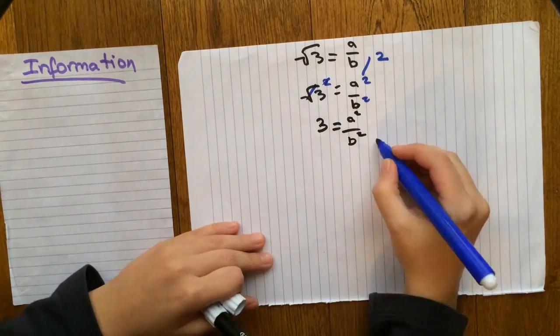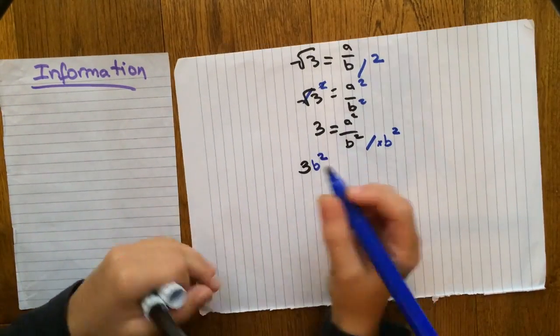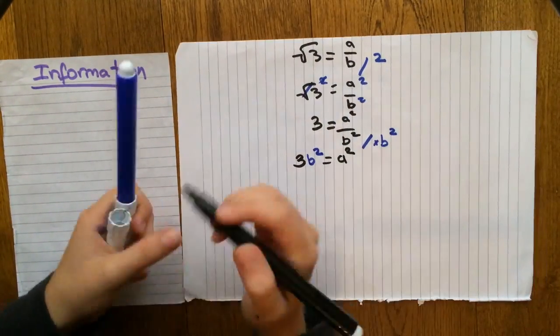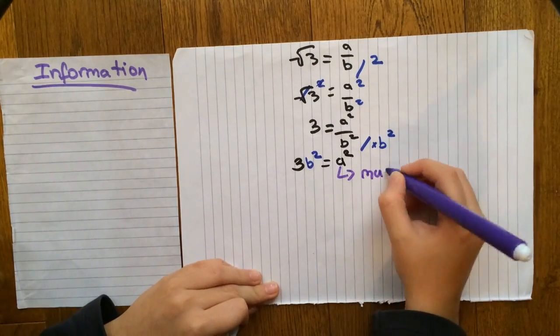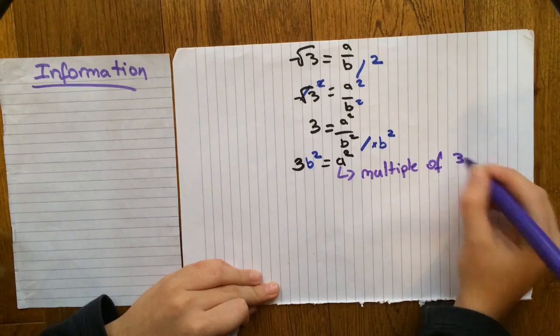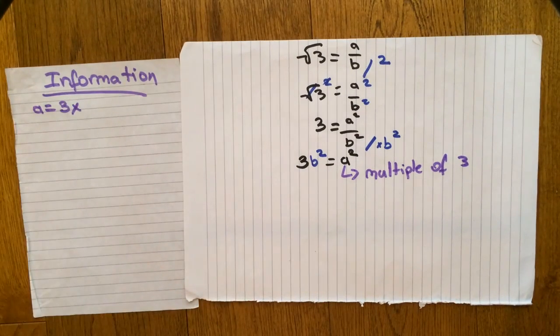Now, let's get rid of the division too, so we just multiply everything by b squared. And what we're left with is 3b squared is equal to a squared. And because 3b squared is equal to a squared, that means that a must be a multiple of 3. So let's write that down in our information log.